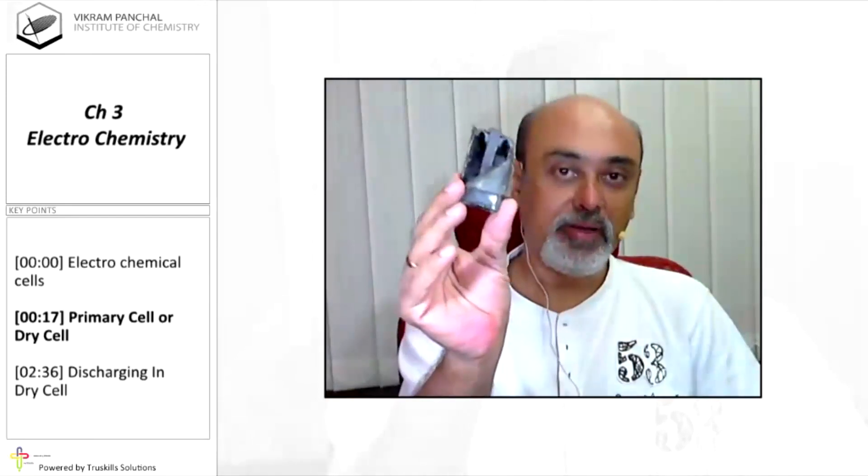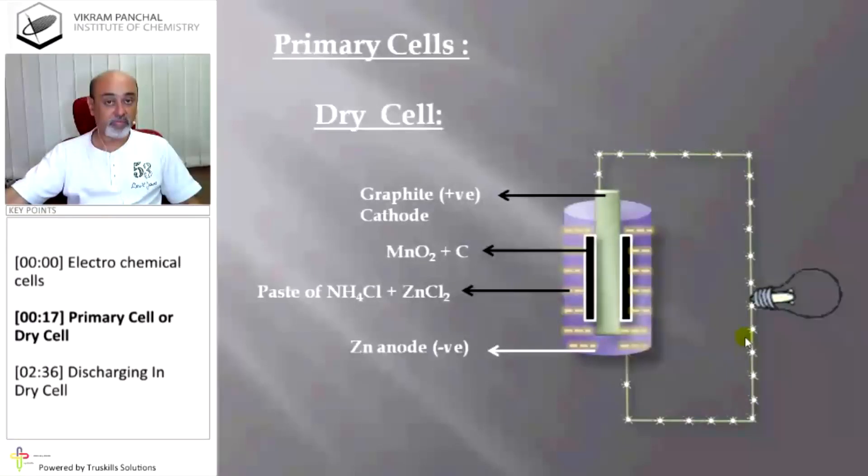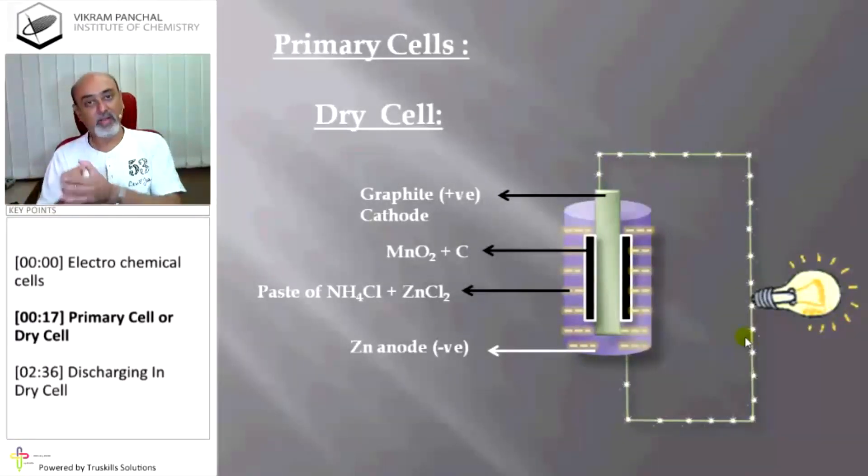It is completely dry so you do not find paste inside this. But if you cut the fresh dry cell then you can see this paste also.